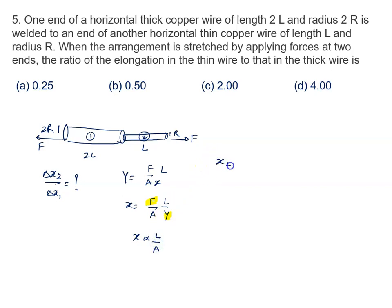So delta X2 upon delta X1 is written as L2 upon L1, A1 upon A2. So what is the value of L2?